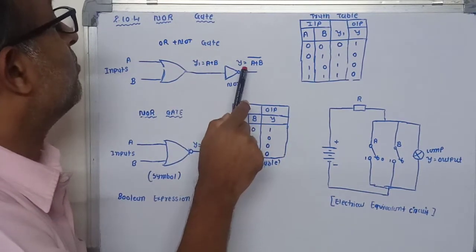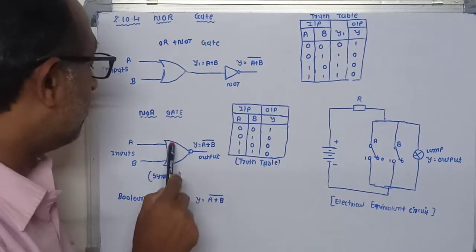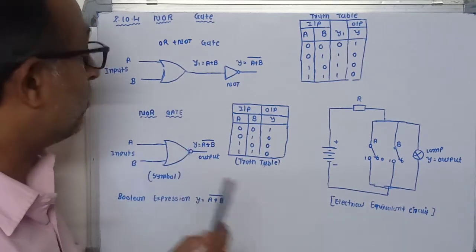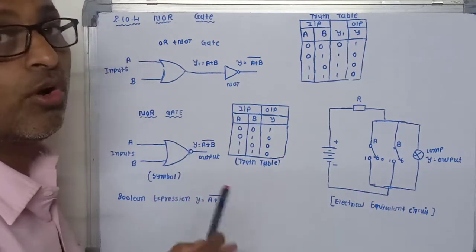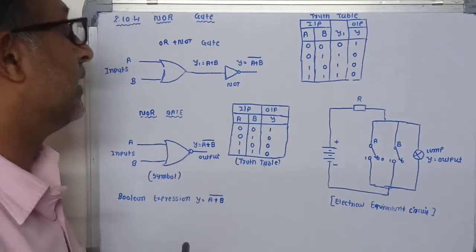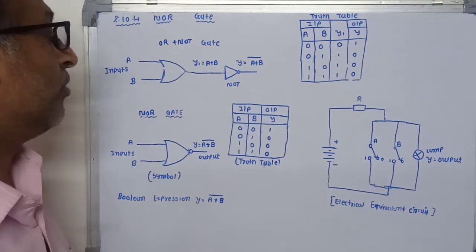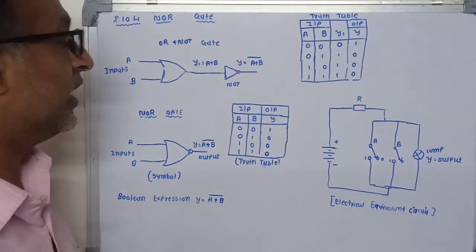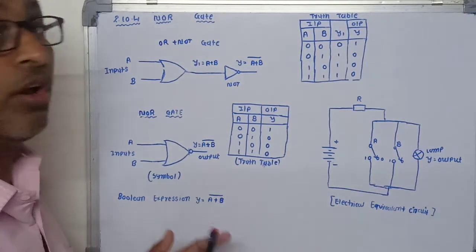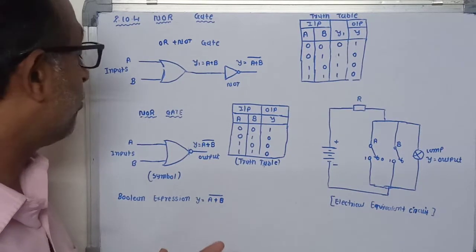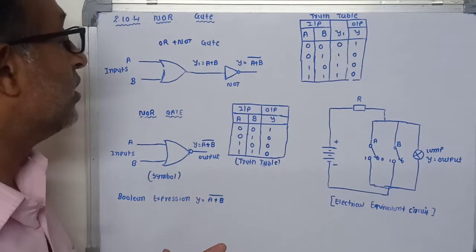The NAND gate is also known as a universal gate because we can construct any basic gate using a combination of NAND gates. The NOR gate is a complementary of the output of the OR gate. The output of the NOR gate is Y equals A plus B bar. Here this is the symbol of the NOR gate — one bubble is added to the OR gate symbol, making it a NOR gate. When either any one input is one or both inputs are one, the output of the NOR gate becomes zero.